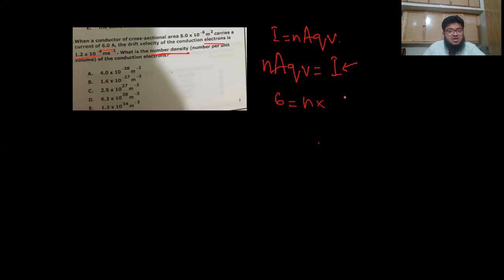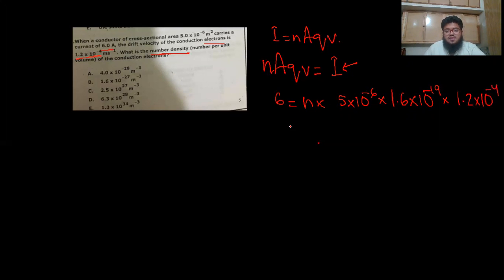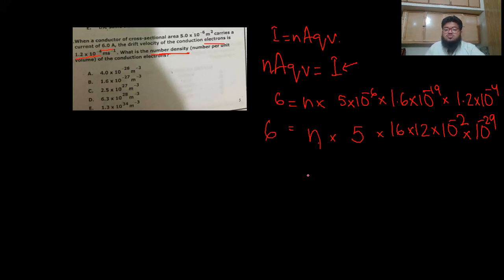Plugging in: 6 = n × (5 × 10⁻⁶) × (1.6 × 10⁻¹⁹) × (1.2 × 10⁻⁴). Simplifying the coefficients: 16 × 12 gives us a factor, written as 10 × 10⁻² with adjustments. Adding the powers of 10 on the denominator side: −6 − 19 − 4 = −29, giving 10⁻²⁹ × (product of coefficients) × n = 6, so n × (some factor) × 10⁻³¹ = 6.